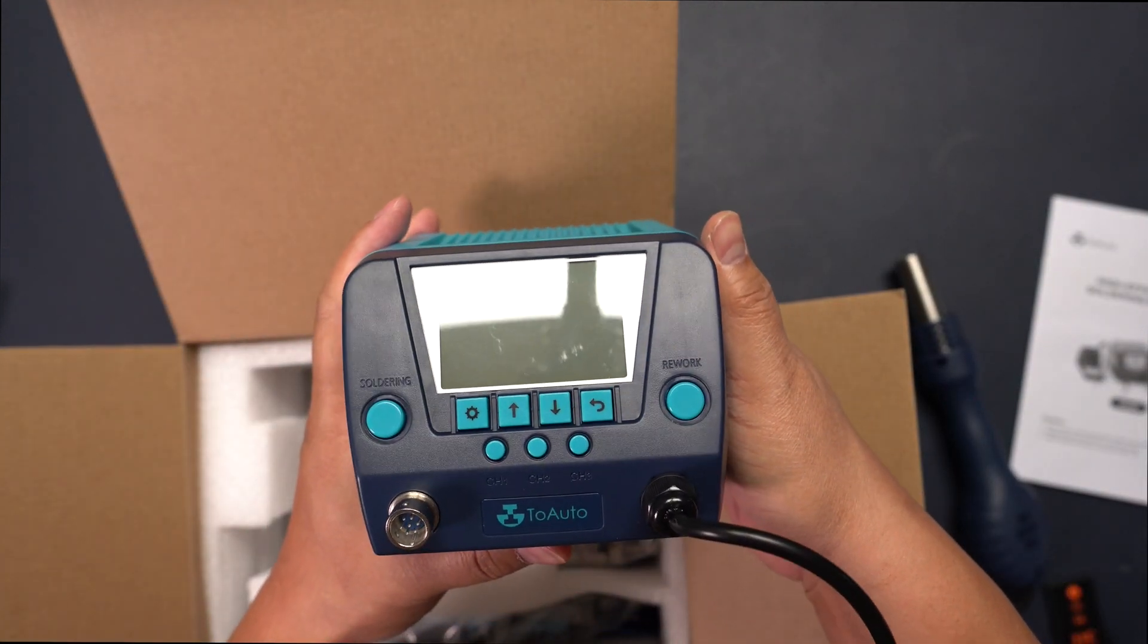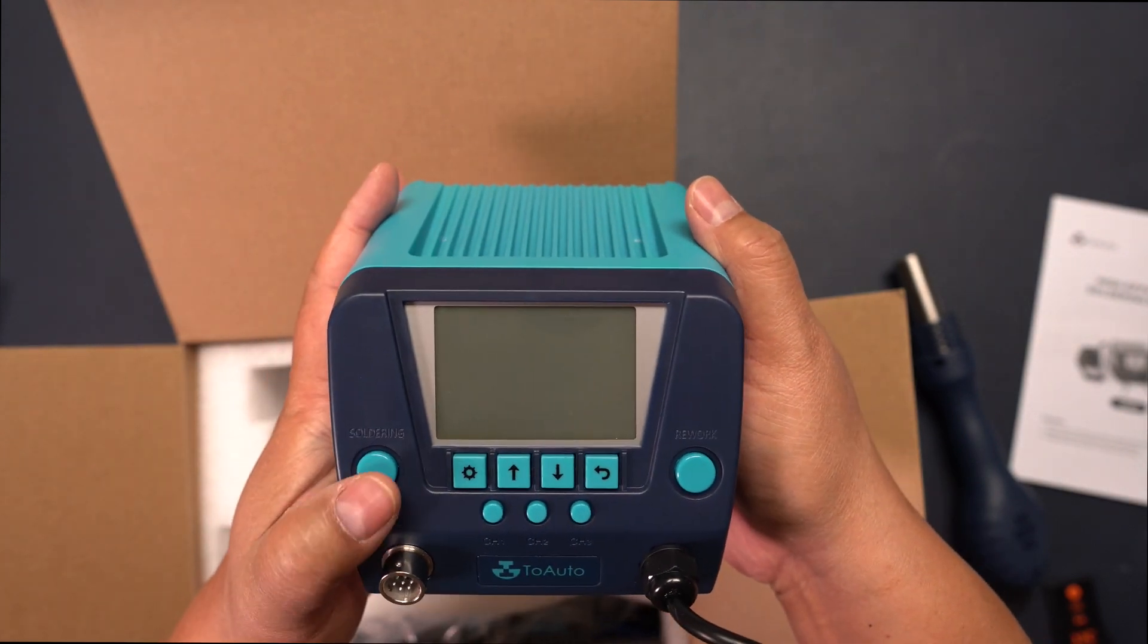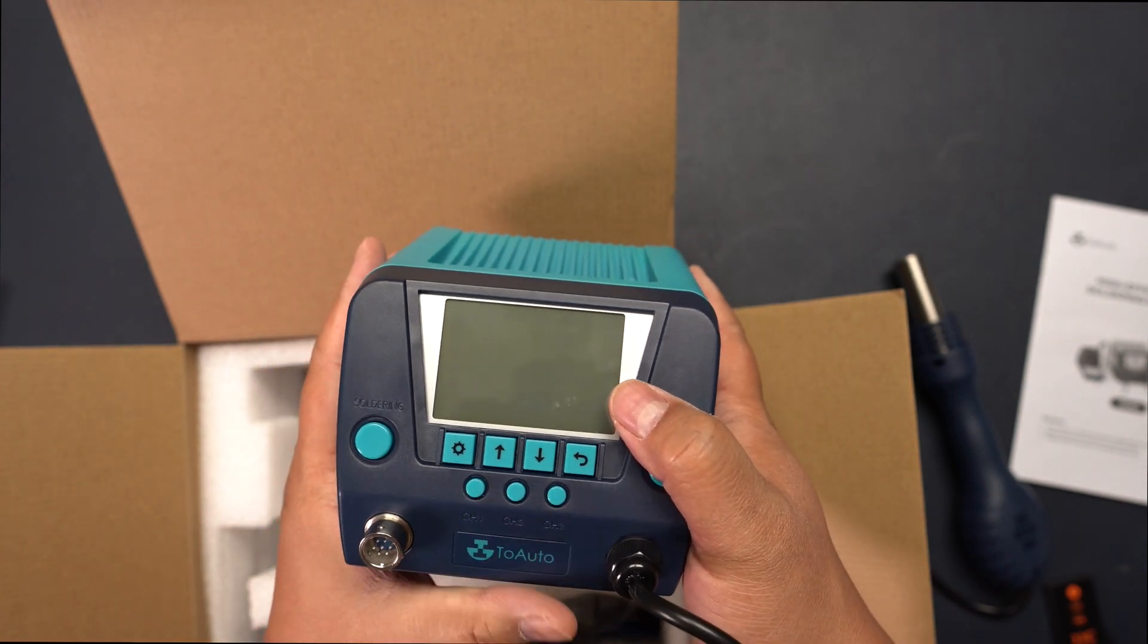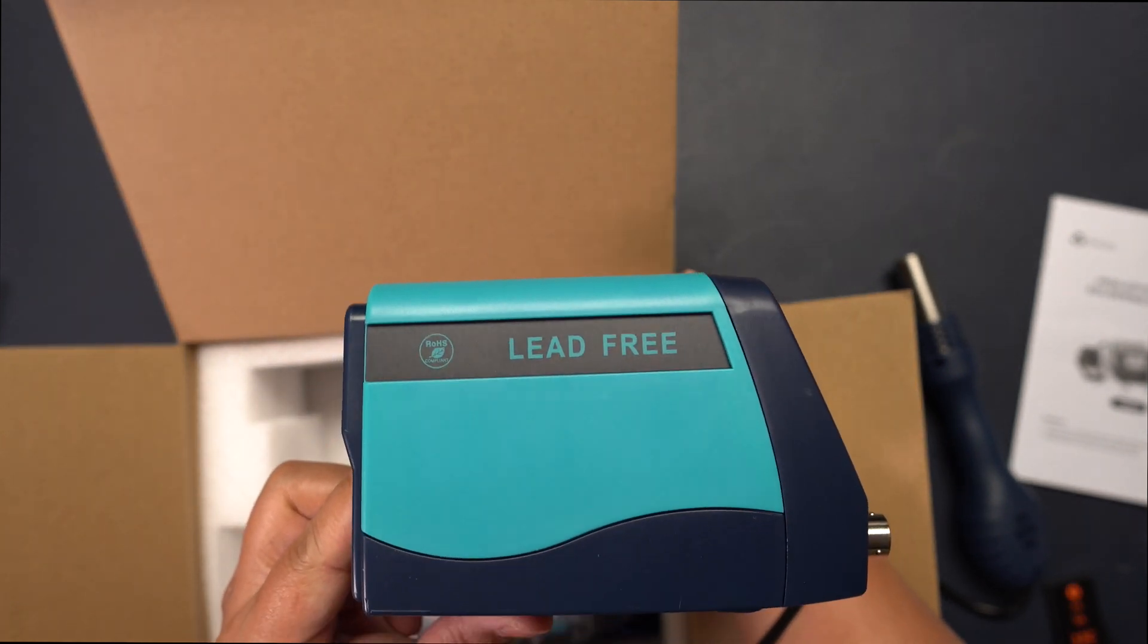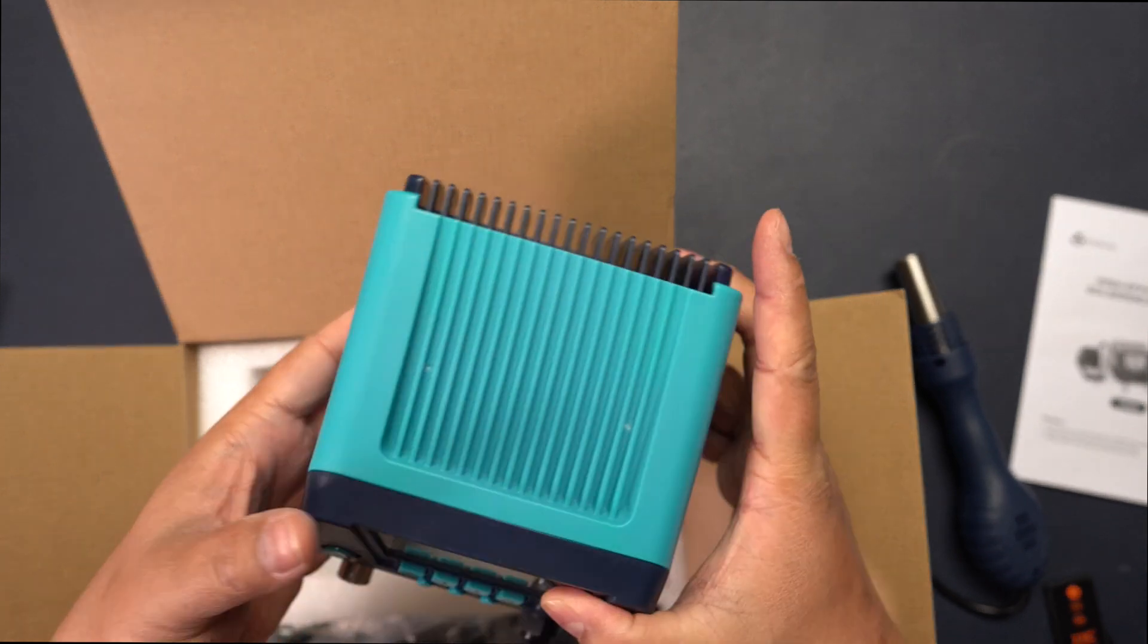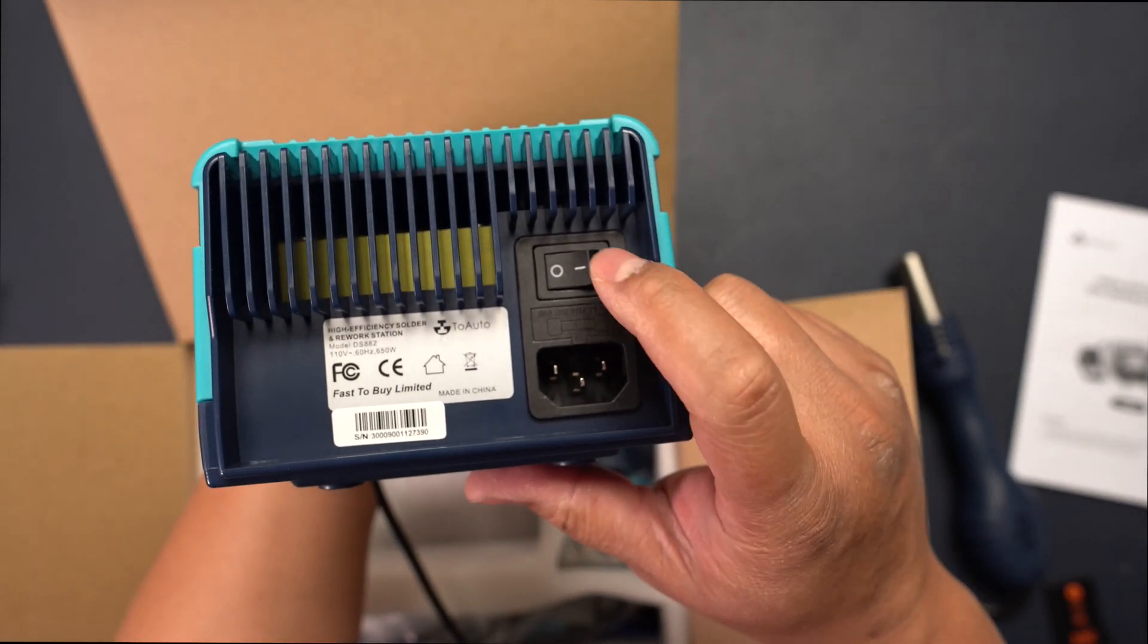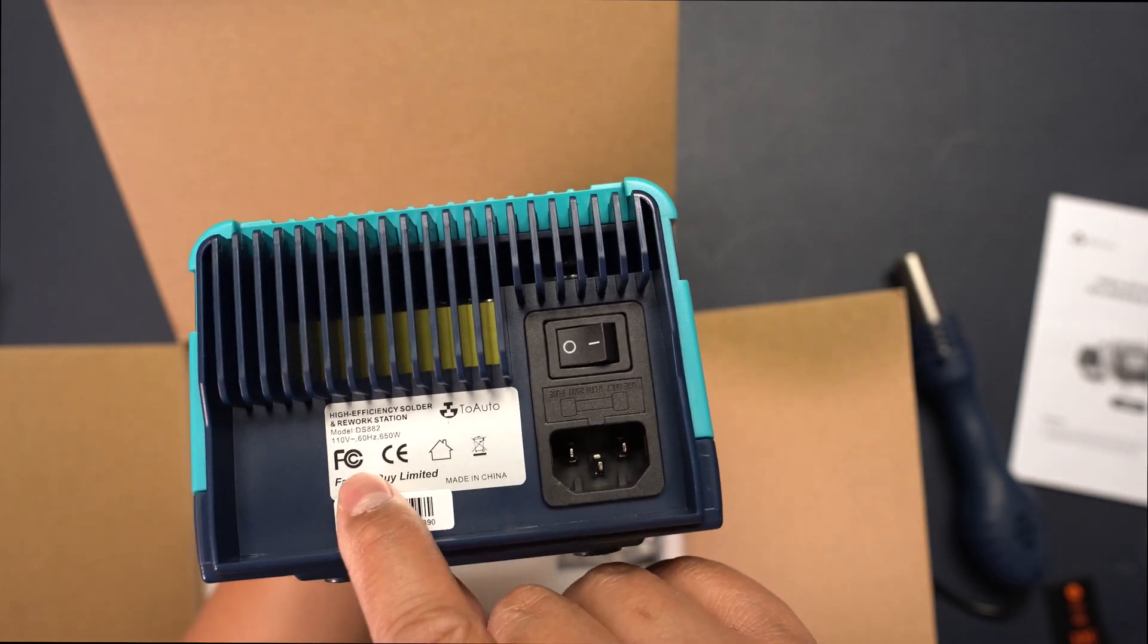Here's the soldering and rework station. Here's the base - soldering or rework, you can see up and down, channel one, two and three. There's a port right here, lead free, rubberized corners right here. This feels really solid, nothing is moving around inside. There's a fuse, on-off switch, and the power input right there. This is the model DS882.